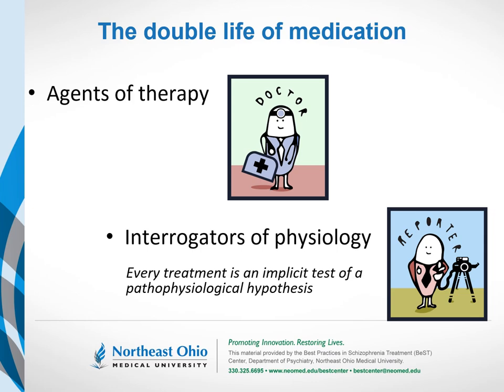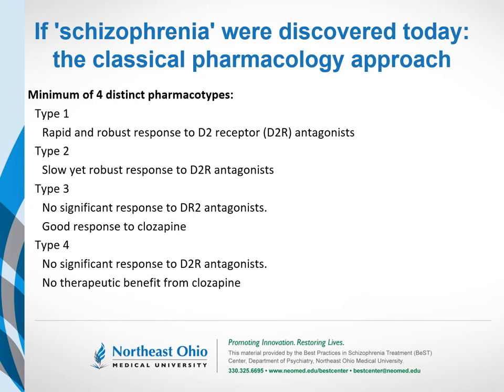With this as our frame, we can look to variable patterns of drug response and posit four pharmacological subtypes — or pharmacotypes — of schizophrenia. Type 1 enjoys a rapid and robust therapeutic response to dopamine receptor D2 antagonists. Type 2 enjoys a robust response to these medications, but the therapeutic response unfolds over months rather than weeks. Type 3 does not respond to non-clozapine antipsychotic drugs but does therapeutically respond to clozapine. Type 4 does not respond to non-clozapine antipsychotic drugs and does not respond to clozapine.